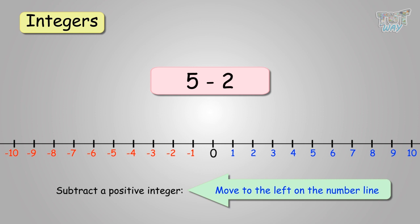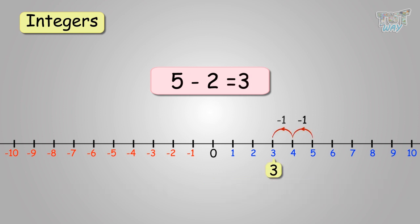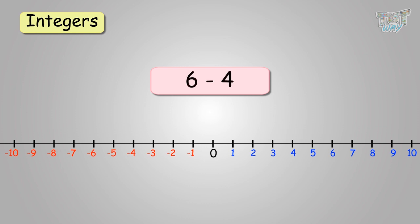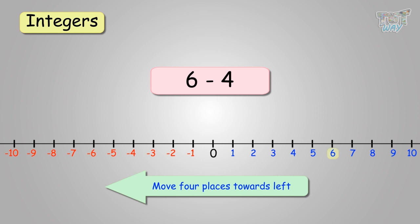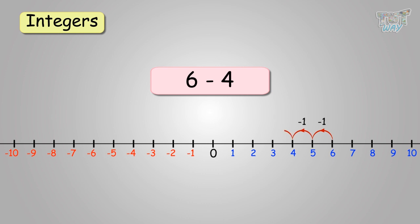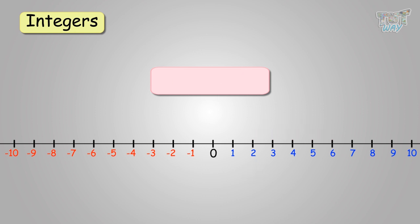So, we start at 5 and then we move 2 places towards the left: 4, 3. So, you get 5 minus 2 equals 3. Let's take another problem. We have to subtract 4 from 6. So, we have to subtract a positive integer, so we will move 4 places towards the left starting from 6: 6 to 5, 5 to 4, 4 to 3, and then 3 to 2. So, the answer is 2. 6 minus 4 is 2. This is how we add and subtract positive integers.